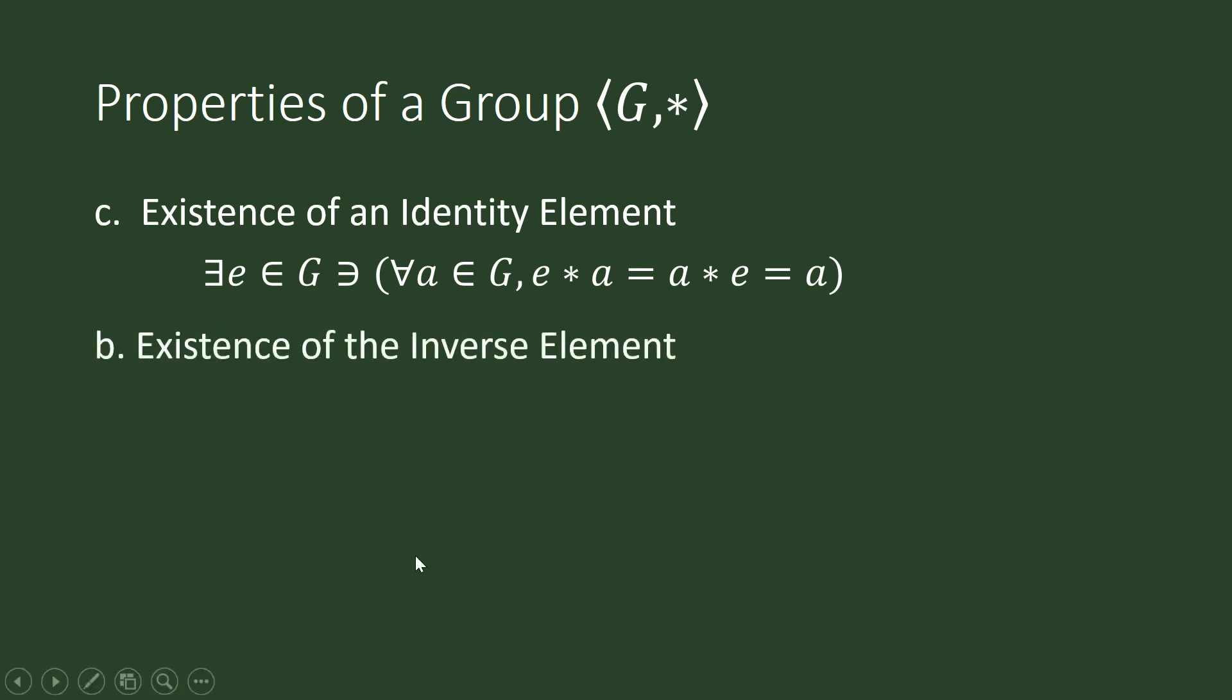The existence of the inverse element. So, for all elements of g or for any element of g, there is an a inverse in g. That is our symbol for the inverse element. You should not interpret this as 1 over a. Because this interpretation is true only when we are working on multiplication. For each element of g, there is an inverse element in g such that a star a inverse is equal to e.